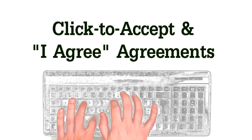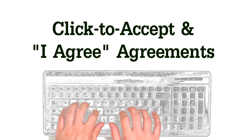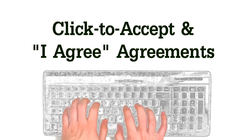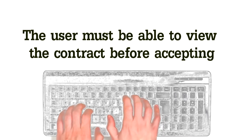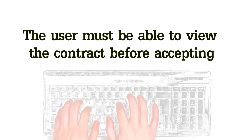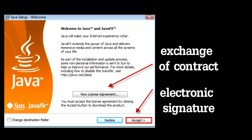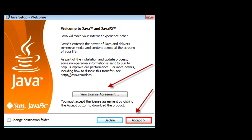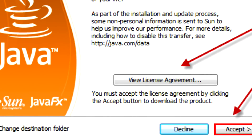Another way to make an electronic agreement is with a click-to-accept or I-agree agreement that is often used in sales or purchase agreements. In a click-to-accept situation, the user can't proceed to the next step in the purchase process without consenting to the agreement.